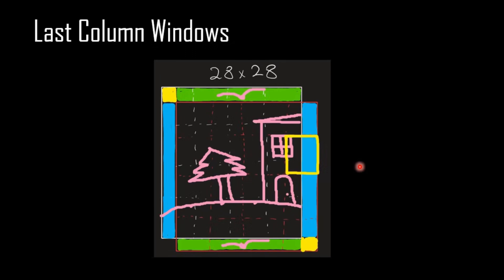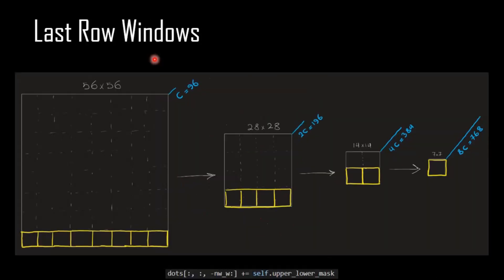This problem happens for all of the windows in the last row, and also for the last column. For example, consider this window — on the left side the tokens belong to the house, but on the right side these tokens are related to the sky because they came from the other side of the image. So we don't want them to be related to each other, and we have to apply a specific type of masking.